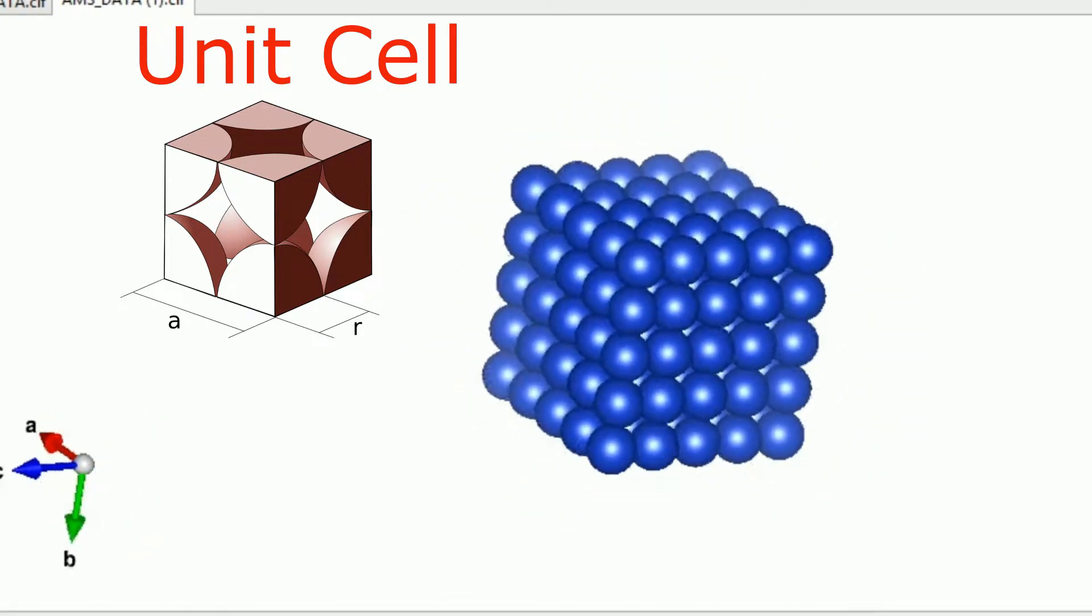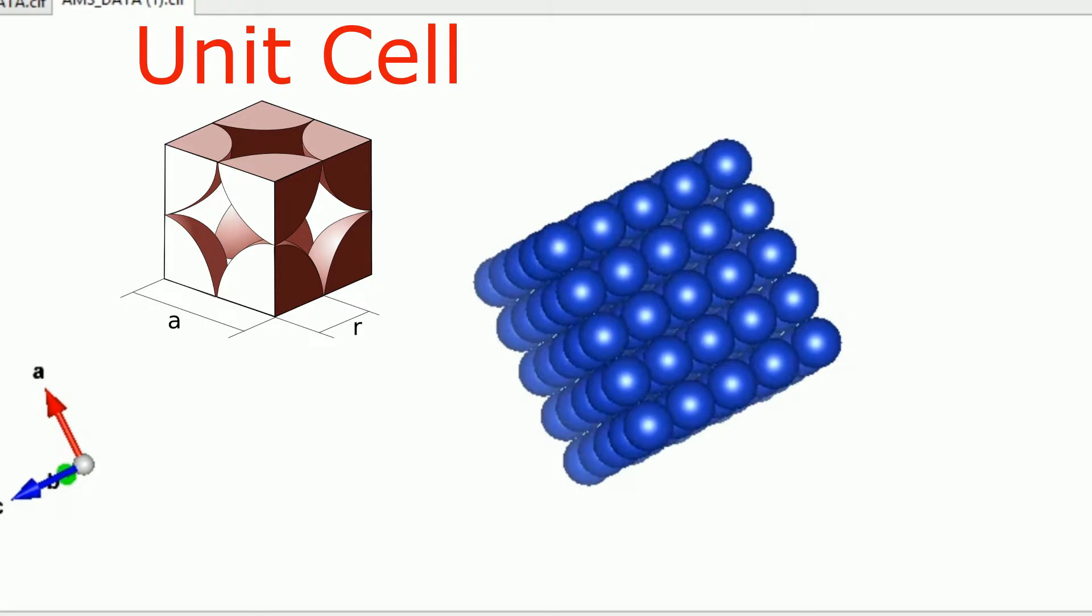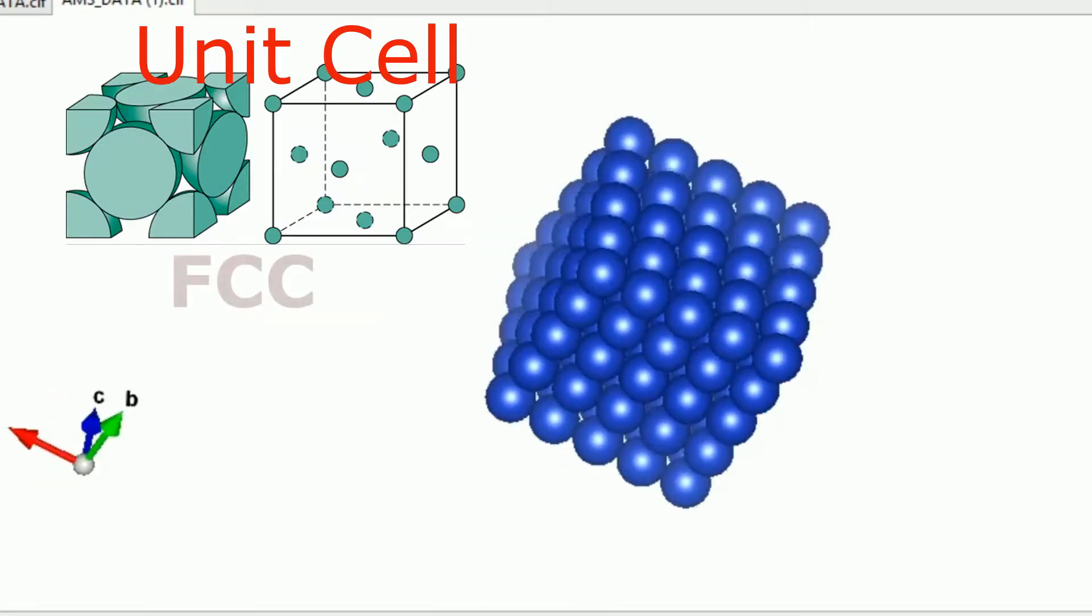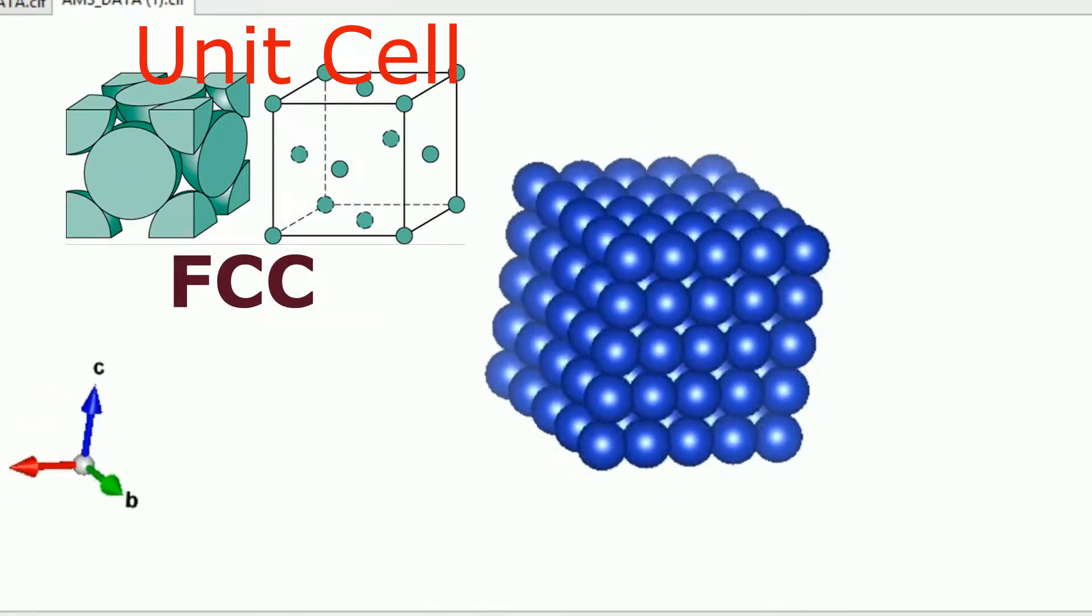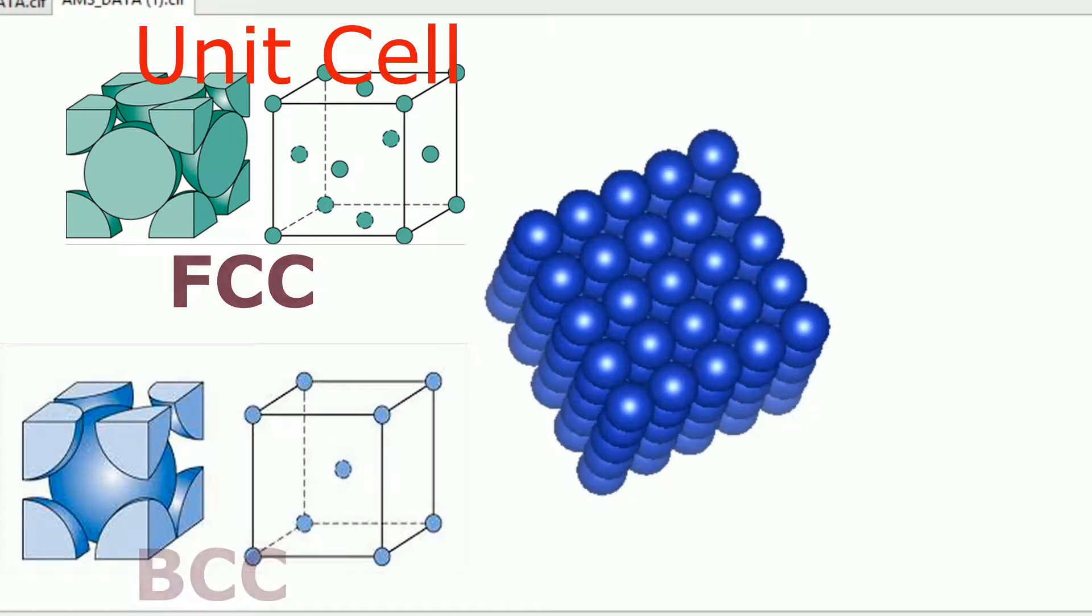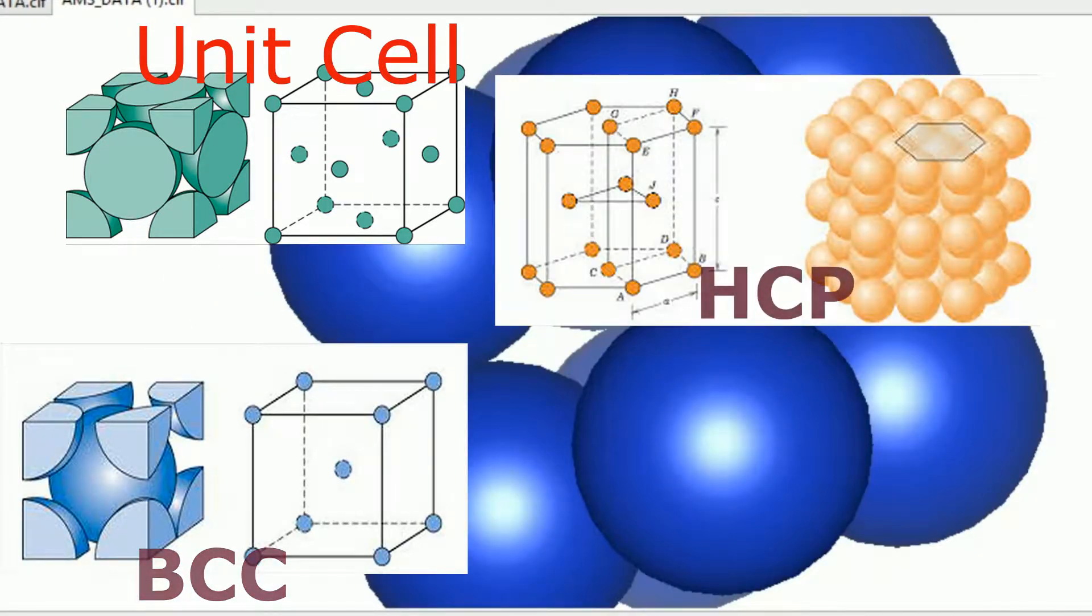There are many types of unit cells. The most common types of unit cells are face-centered cubic, body-centered cubic, and hexagonal closed-packed.